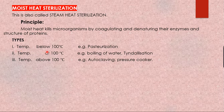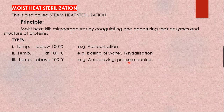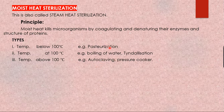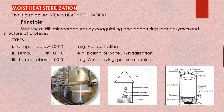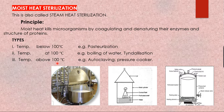The methods of moist heat sterilization are organized by temperature. Temperature below 100°C — example is pasteurization. Temperature at 100°C — example is boiling of water or tyndallization. Temperature above 100°C — example is autoclaving or pressure cooker. Here you can see pasteurization occurring in a dairy industry, tyndallization equipment where water is used at around 80°C, and the autoclave used above 100°C.